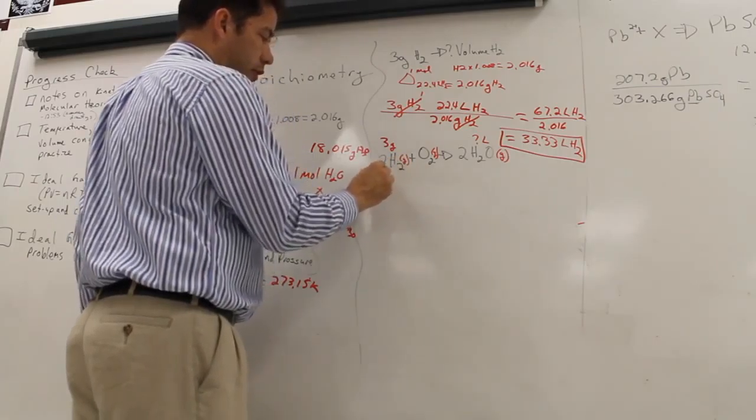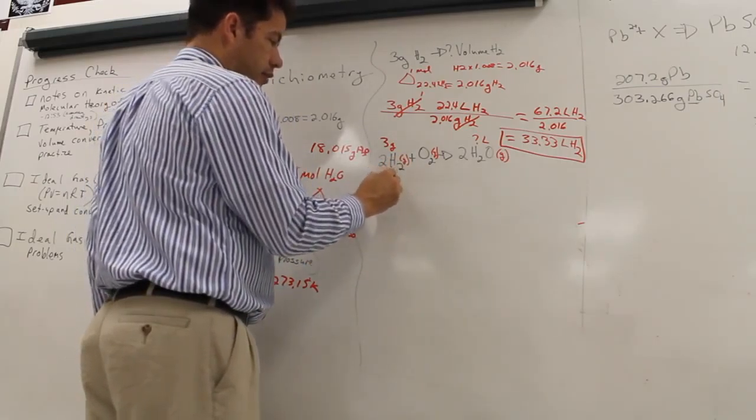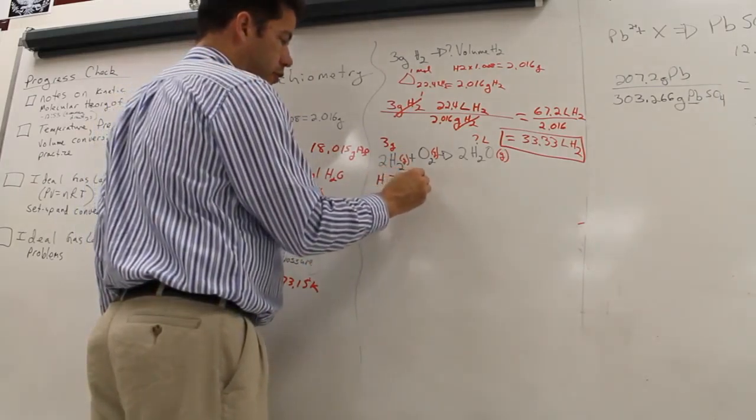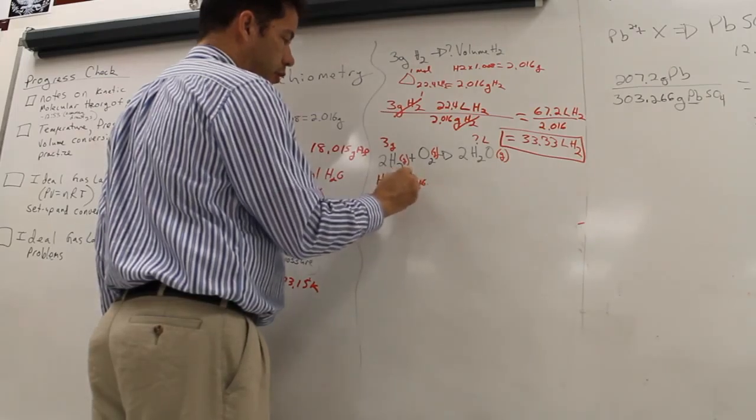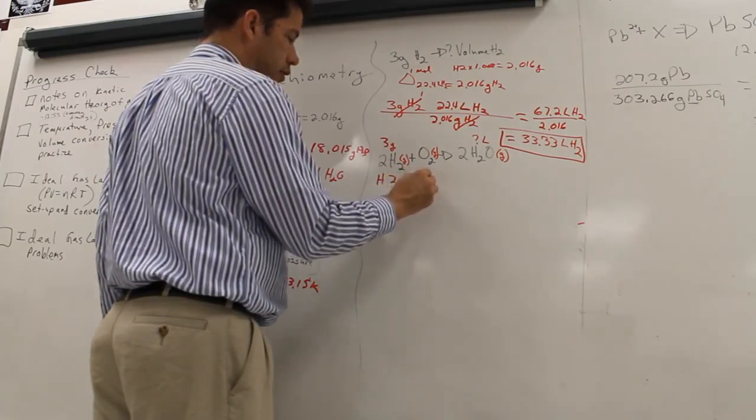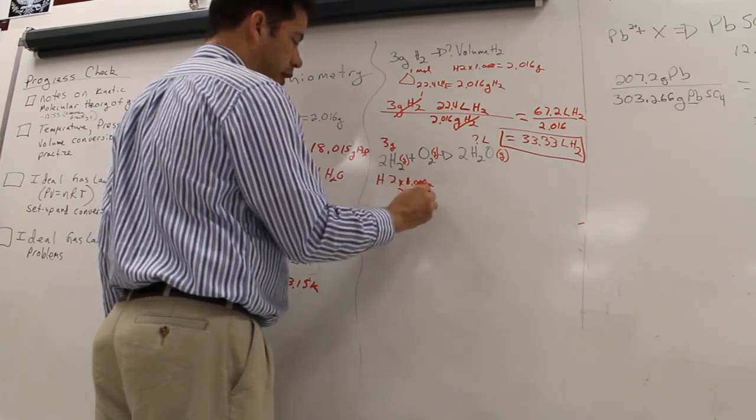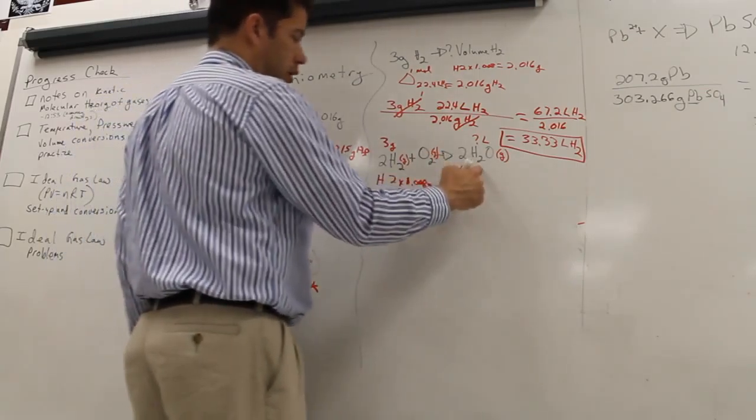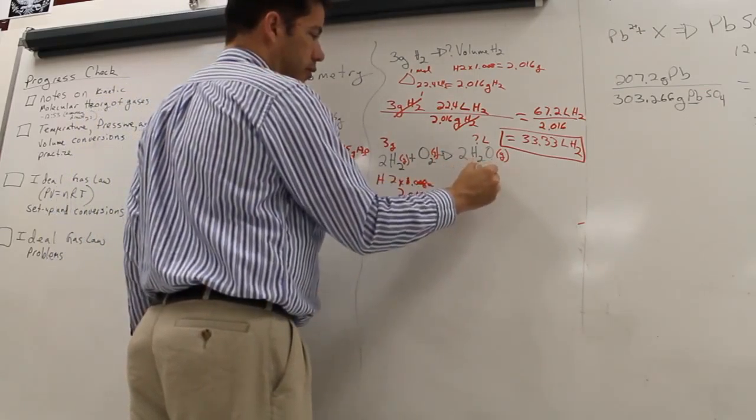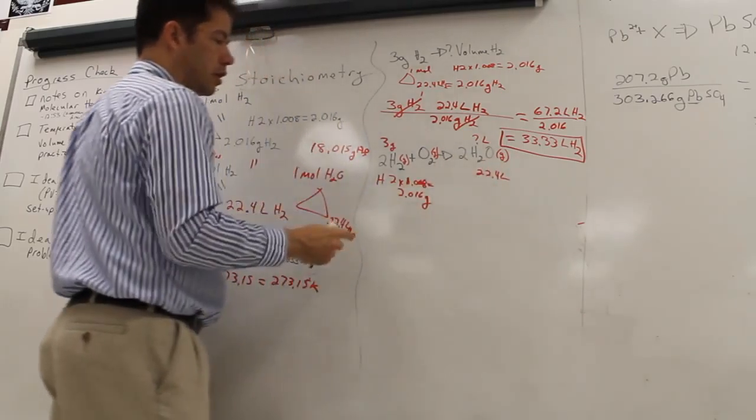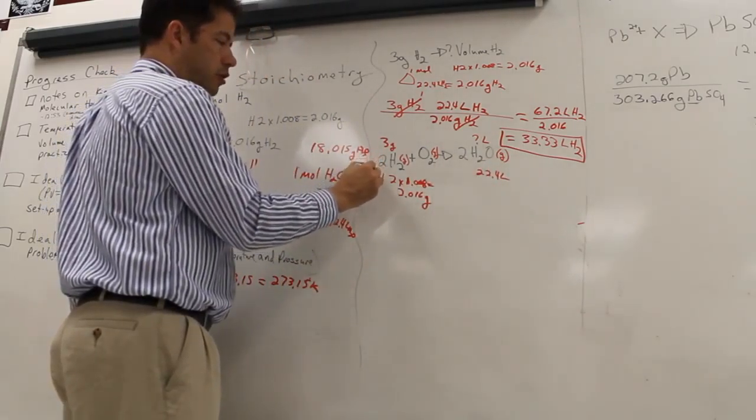So I know that each one of these, I'm going to have to do the triangle, right. Two times 2.016, or 1.008, which equals 2.016 grams. This is going to be 22.4 liters. Notice that basically I'm doing the triangle, right.